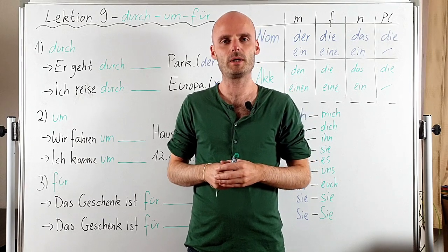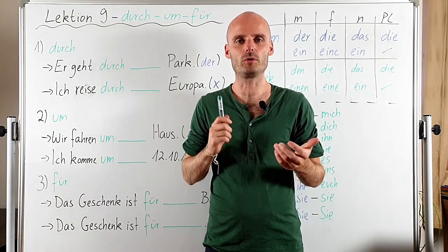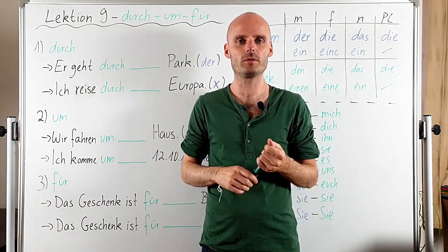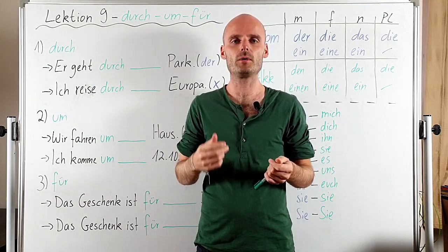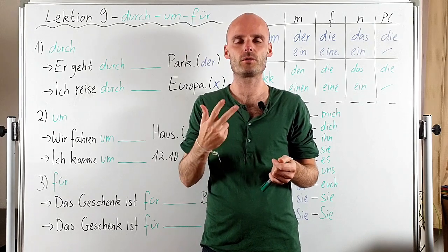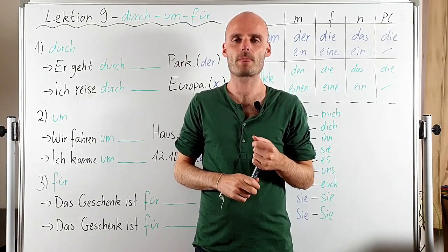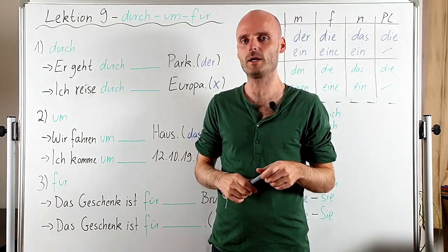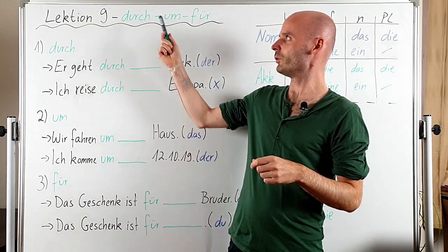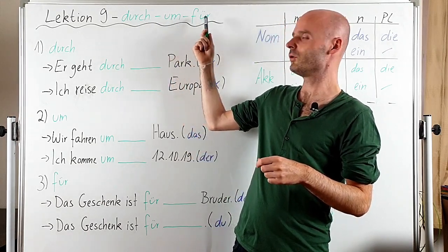Hey guys and welcome back to another episode. Today we will take a look at our first three accusative prepositions, and the three ones that we will take a look at today are Durch, Um, and Für.